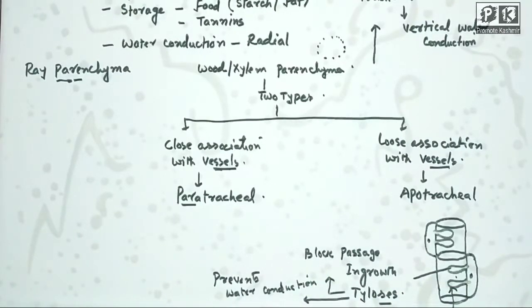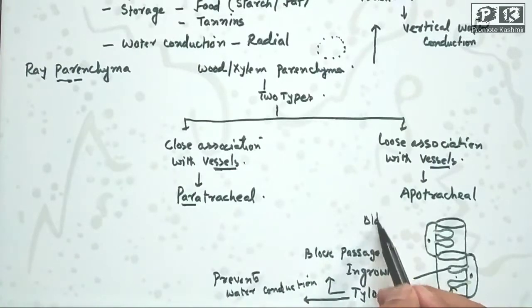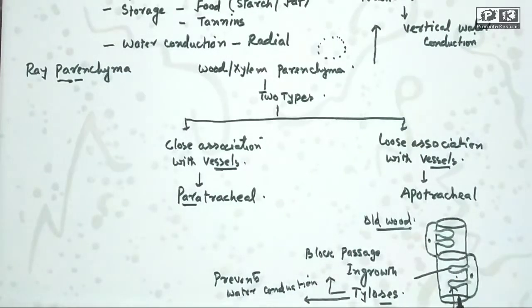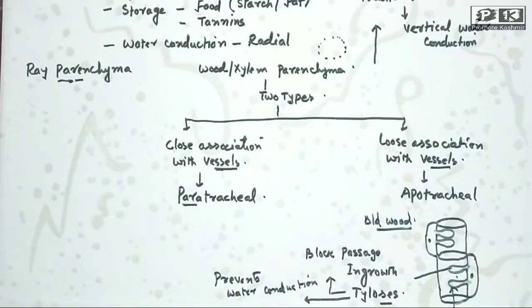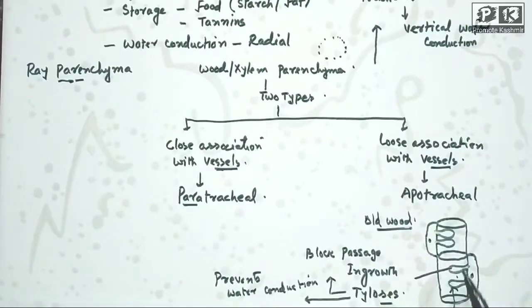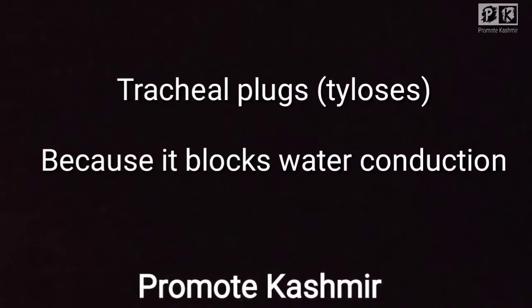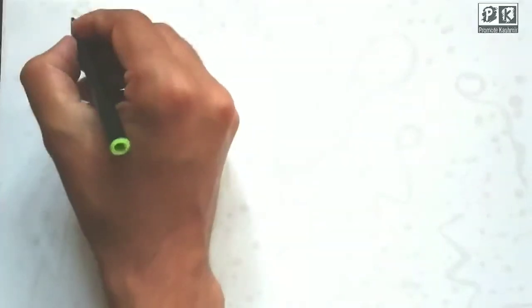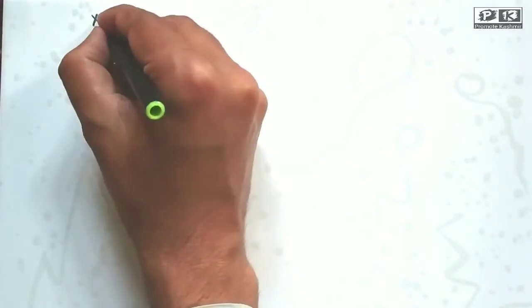This occurs in old wood. In old wood, ingrowth and tyloses are formed, blocking the passage inside xylem vessels so that water conduction is prevented. These tyloses are present in old xylem and prevent conduction of water.